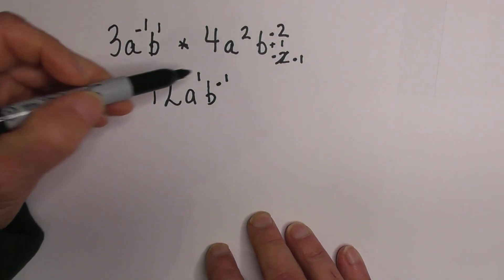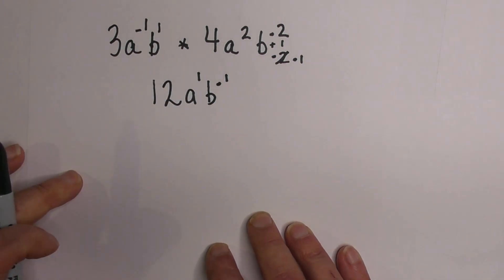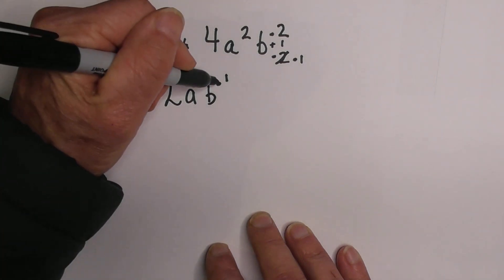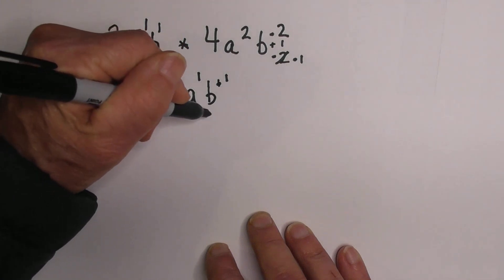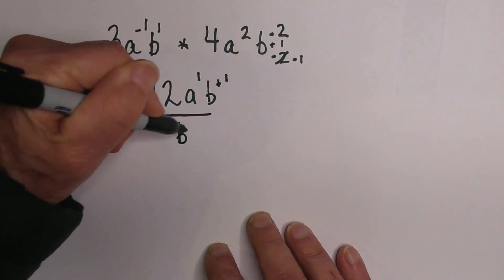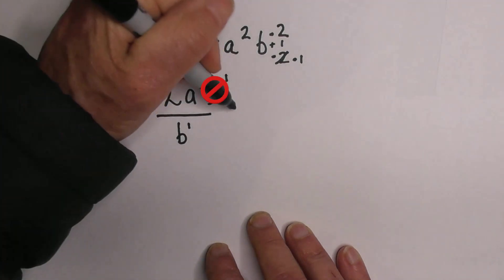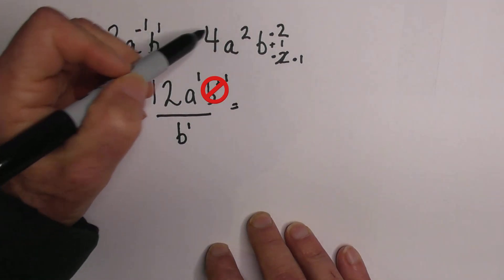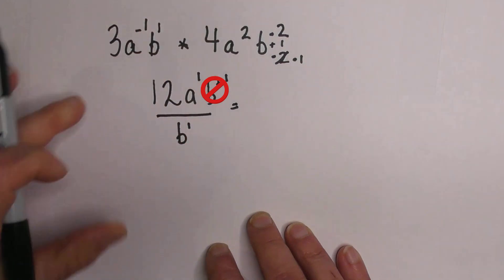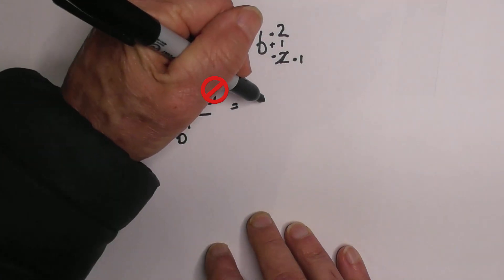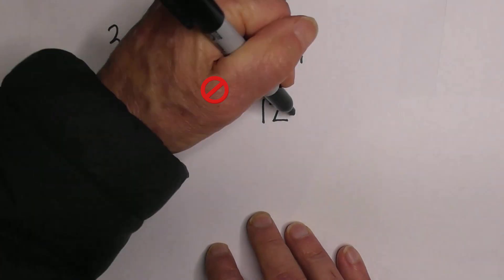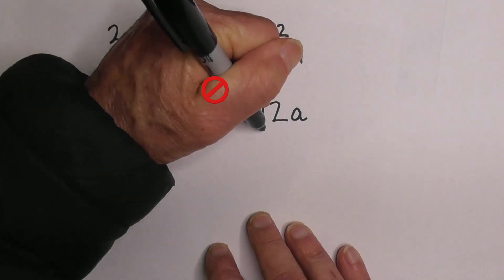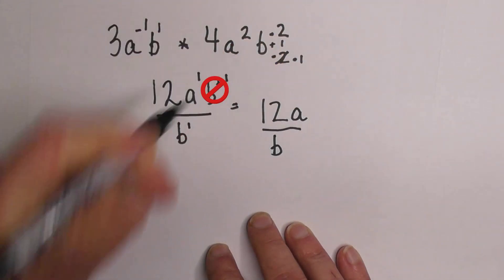Now, we know that we can't have a negative exponent. So what we can do, just like we did in the first video, is change the sign, but we're going to move it to the bottom. So when we simplify 3A negative 1B times 4A squared B negative 2, it becomes 12A over B.